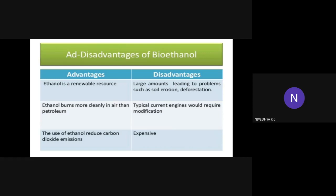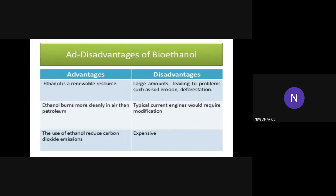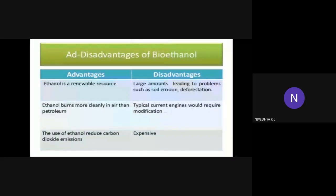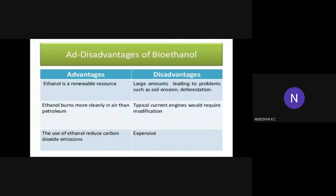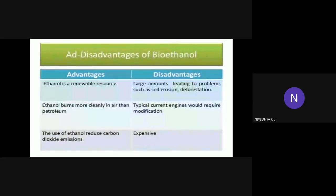Advantages and disadvantages of bioethanol. Advantages: ethanol is a renewable resource — we can renew the resources again and again. Ethanol burns more cleanly in air than petroleum. The use of ethanol reduces carbon dioxide emission — carbon footprint is very low. Disadvantages: large amounts can lead to problems such as soil erosion and deforestation. Typical current engines would require modification. The bioethanol extraction process is highly expensive.